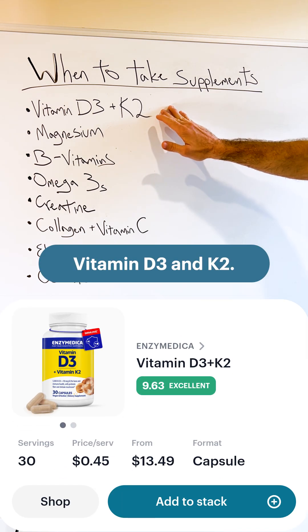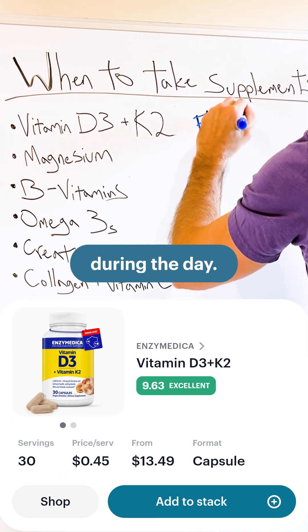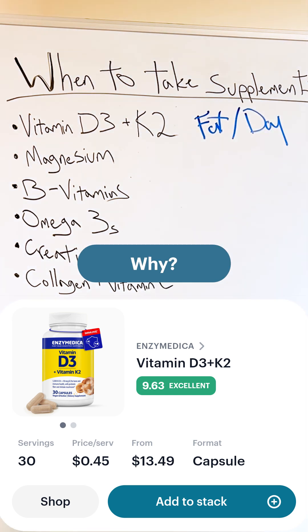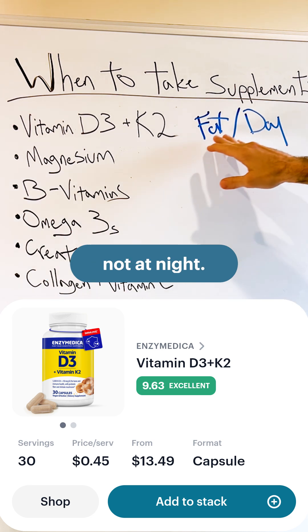Let's start with vitamin D3 and K2. Take these with a meal that has fat during the day. Why? Because naturally we get vitamin D when the sun's out, your body expects it during daylight hours, not at night, and the fat helps significantly with absorption.